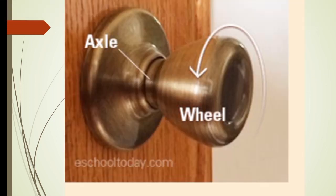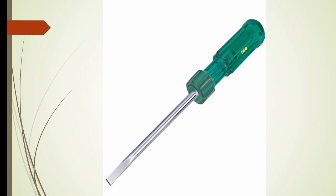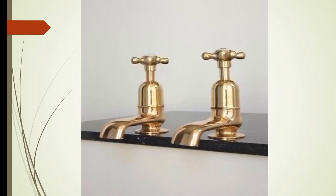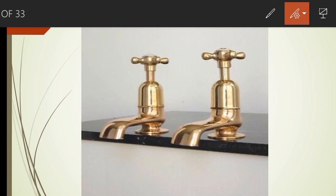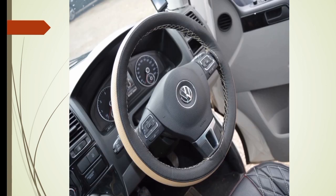Examples of wheel and axle include a doorknob, where the knob part is the wheel which we turn to open the door, and the shaft is the axle. A screwdriver, where the handle is the wheel and the shaft is the axle. Similarly, a water tap is also an example of wheel and axle, where the tap handle is the wheel and the shaft is the axle. Next, the steering of a car is also an example.